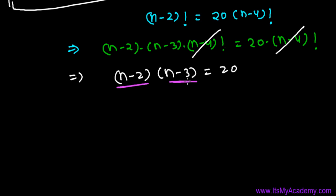See, (n-2) and (n-3) are consecutive numbers, one after another. We have 20, so what are the factors of 20 which are consecutive? We can say 10 times 2, or 5 times 4, or 20 times 1. But which one is consecutive? 10 and 2, not consecutive. 20 and 1, not consecutive. 5 and 4, consecutive.